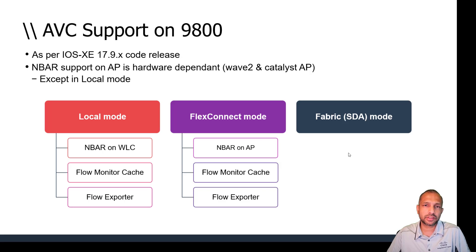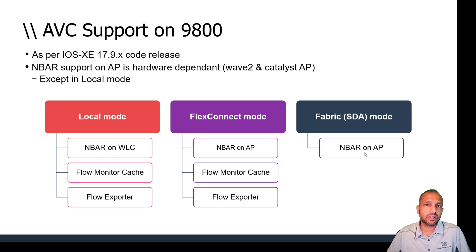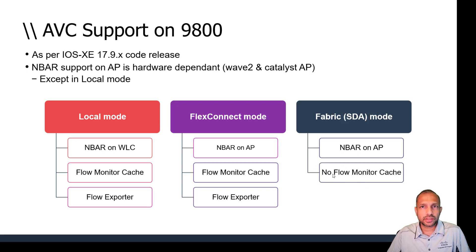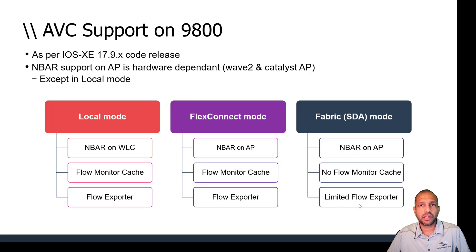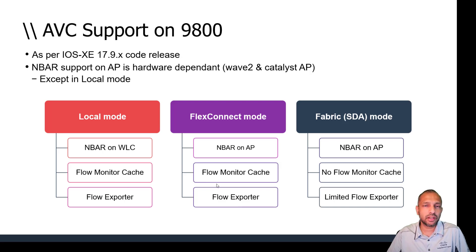In fabric mode (SD-Access wireless), it is similar to FlexConnect but uses VXLAN for macro and micro segmentation. The AP handles the traffic, so NBAR and ABC configuration must be pushed down to the AP. However, the AP will not maintain the flow cache, which limits flow exporter support. In summary: local mode gives full functionality regardless of AP model; FlexConnect requires Wave 2 or Catalyst APs; fabric mode has limited support with the AP doing heavy lifting.